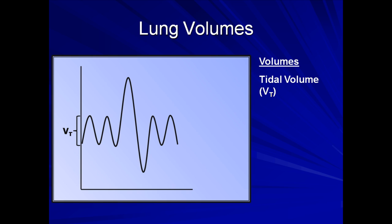The third breath in the graph is substantially larger. Here, the patient was asked to take in as deep an inspiration as possible. The additional volume of air that the lungs could accommodate beyond the tidal volume is known as the inspiratory reserve volume. Then the patient is asked to exhale as completely as possible. The additional volume of air expelled beyond the tidal volume is known as the expiratory reserve volume.